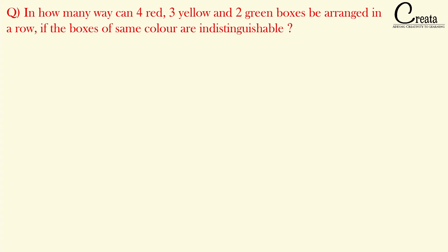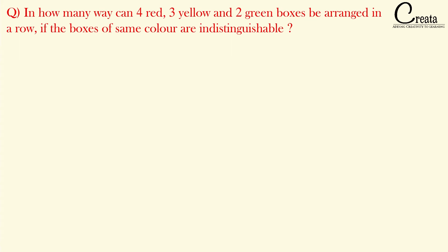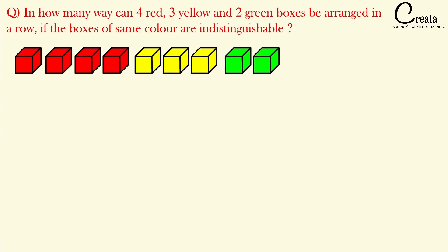Let's try to solve this question. In this question, we are having a total of 9 boxes: 4 red boxes, 3 yellow boxes, and 2 green boxes. We have to arrange these boxes in a certain order. So basically we have 9 boxes and 9 vacant places, that is N equals 9 and R equals 9.